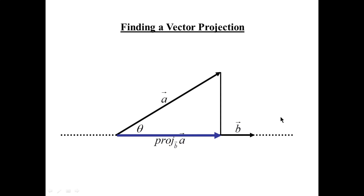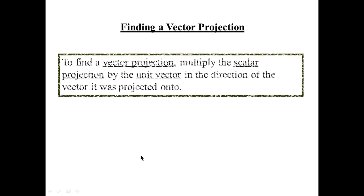Now we want to find a vector projection. So far we've focused on the scalar projection — the length of the vector. Suppose we wanted the actual vector itself. The plan: find the unit vector in the direction of B, multiply it by the scalar projection of A onto B — which is A·B divided by |B| — and that gives us the actual vector projection.